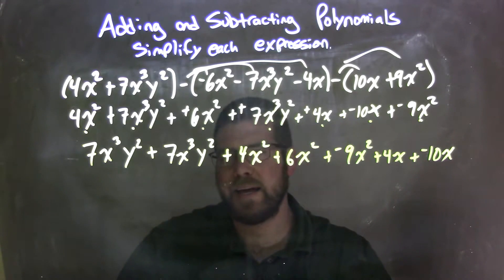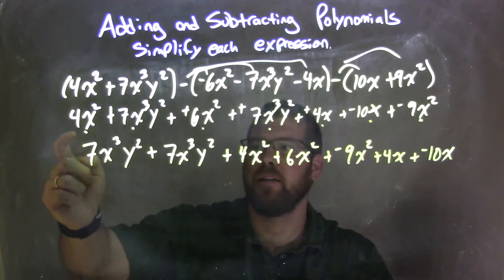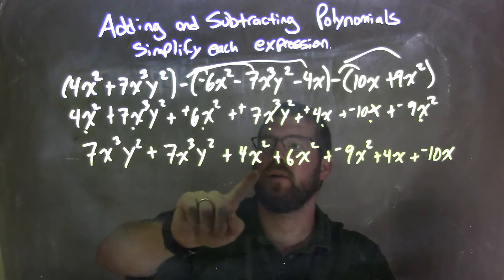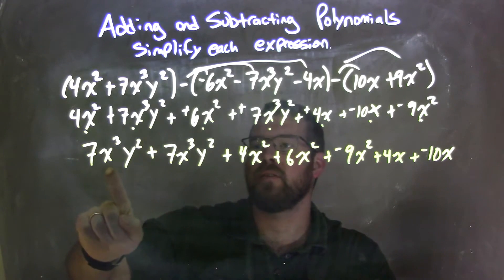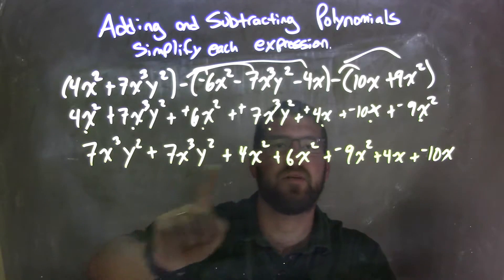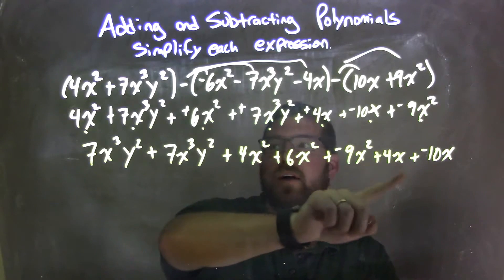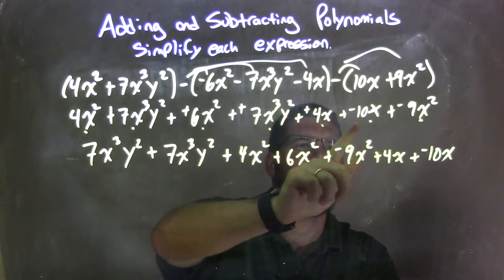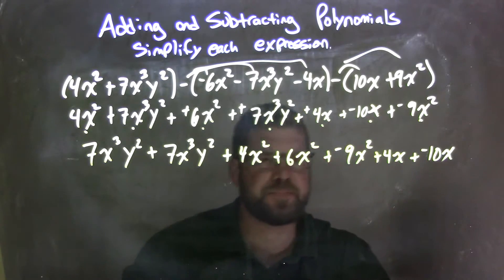It almost looks like it's more complicated here. Nothing really simplified, but what I did is I made sure I brought everything down using the dot method. Let me double-check: 4x squared right there, 7x to the third y squared right there, 6x squared right there, 7x to the third y squared right there, the 4x right there, negative 10x right there, and negative 9x squared.